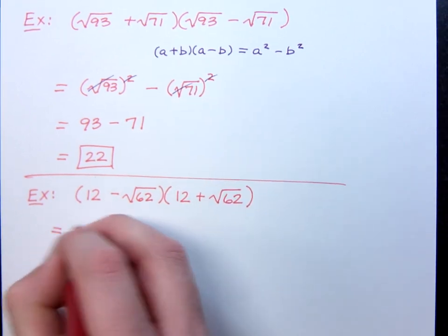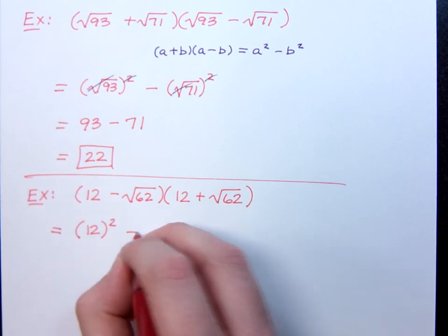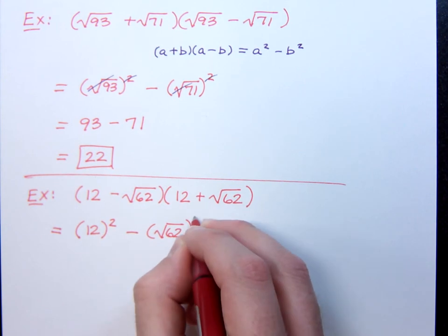Which means, when I write this, you want to make sure that you do write the formula correctly. Actually, this is 12 squared minus the square root of 62 squared.